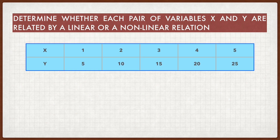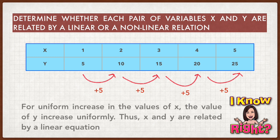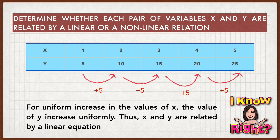Let's determine whether each pair of variables x and y are related by a linear or a non-linear relation. From the table, you can see that when the value of x increases, the value of y increases by 2, and the value of y increases by adding 5 uniformly. Therefore, we can conclude that for a uniform increase in the values of x, the value of y increases uniformly. Thus, x and y are related by a linear equation.